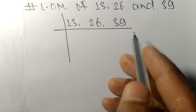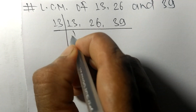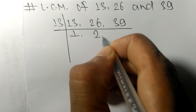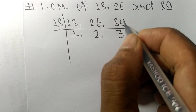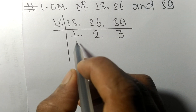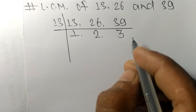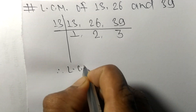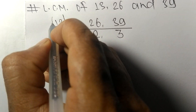All three numbers are divisible by 13: 13 times 1 is 13, 13 times 2 is 26, and 13 times 3 is 39. Now, these resulting numbers are not all divisible by the same number, so we proceed to find the LCM.